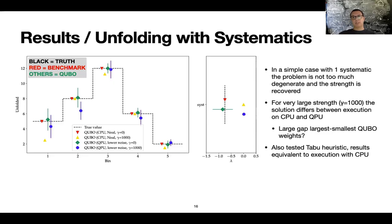We also tested a hybrid approach based on a tabu search and the results are basically equivalent between the execution of QPU and the hybrid execution. Although it was not easy to disentangle the part of the optimization that is performed on a QPU and the part that is performed on the CPU.